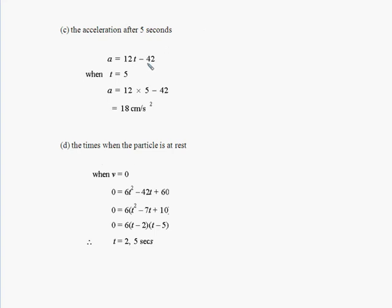For the acceleration after five seconds, we derive the velocity or take the second derivative of the position function, then substitute five. Substituting five, we get 18 centimeters per second squared. So it's got a positive acceleration, though not necessarily moving in a positive direction, but its acceleration is positive.